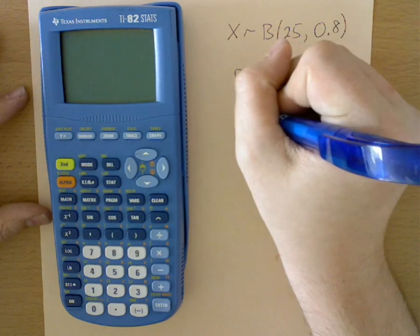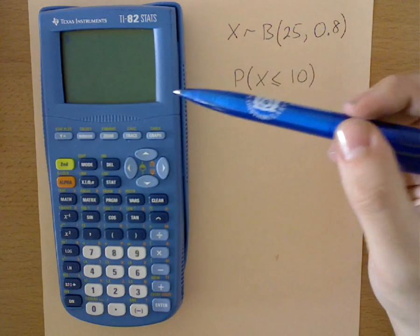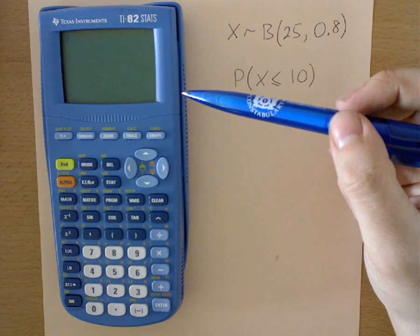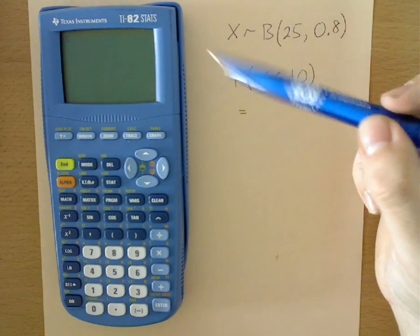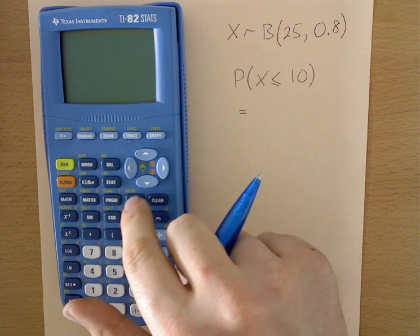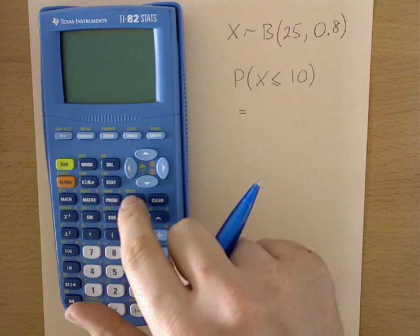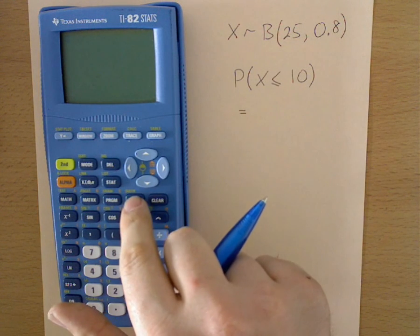So in order to do that, we need to find the binom CDF function that is on this graphical calculator, the TI-82 stats. So if we go into the distribution section, we press 2nd and the VARS button.